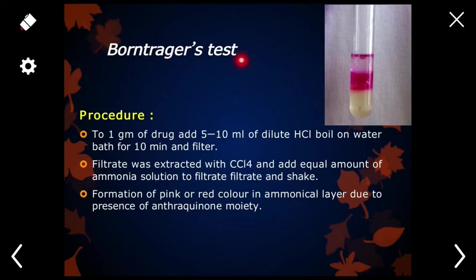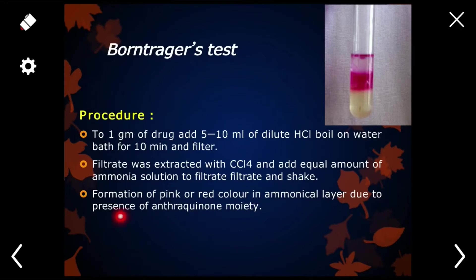The Borntrager's test is a typical test used for anthraquinone glycosides and is a very simple class test. You have to take 1 gram of drug, then add 5 to 10 ml of dilute HCl, boil it on a water bath for 10 minutes, and filtrate. The filtrate is extracted with carbon tetrachloride, then add an equal amount of ammonia solution and shake it. Formation of pink or red colour in the ammoniacal layer indicates the presence of anthraquinone moiety. This pink colour represents the presence of anthraquinone glycosides.